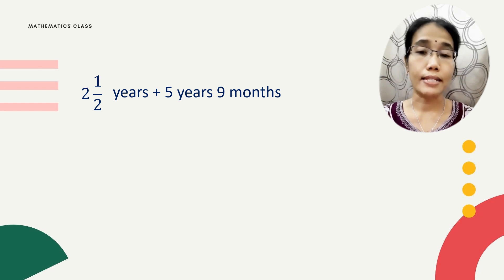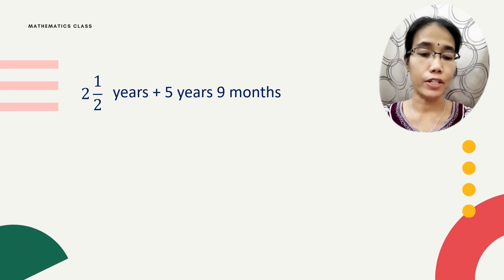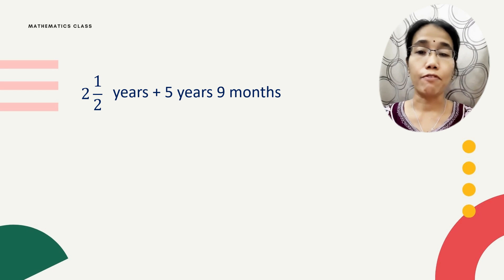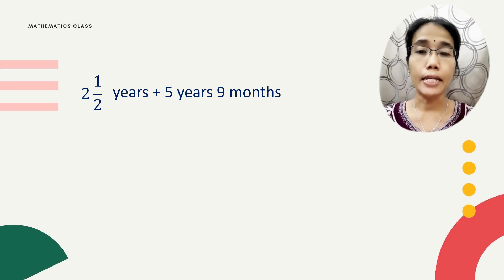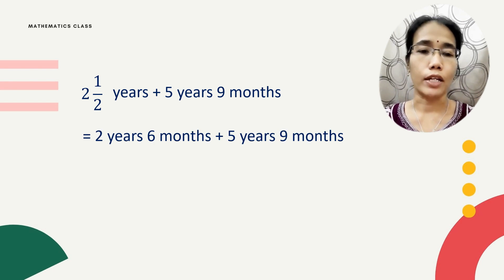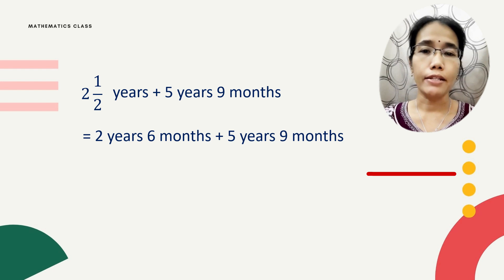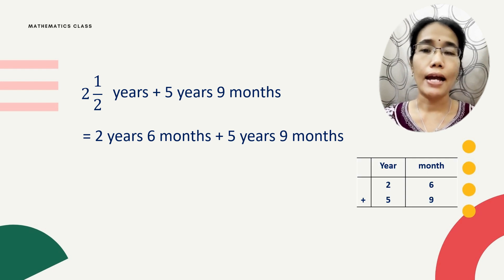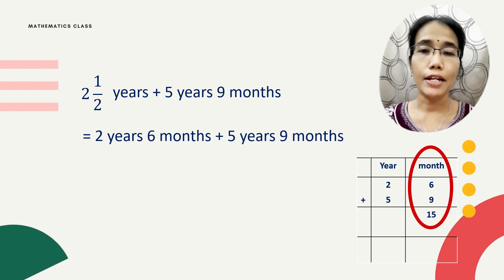Now let's see Example 3: two and one-half years, or two and a half years, plus five years nine months. As you can see, we have a fraction here, so convert the fraction to years and months. Two and a half years gives you two years and six months. Now to add them, do a T-line, then write month and year — add month with month and year with year.